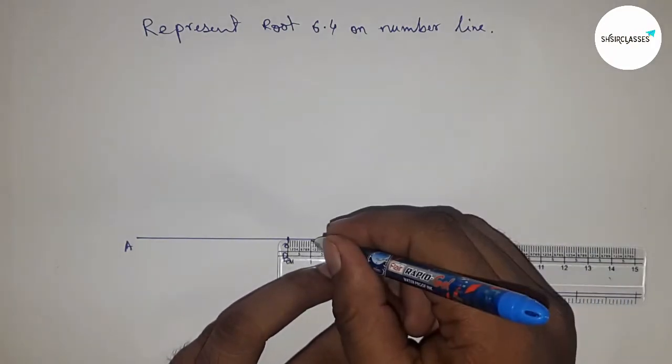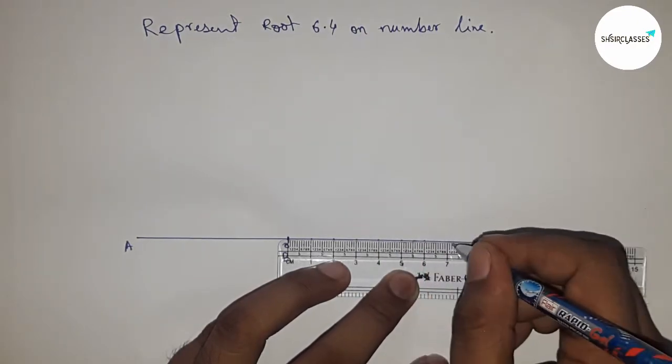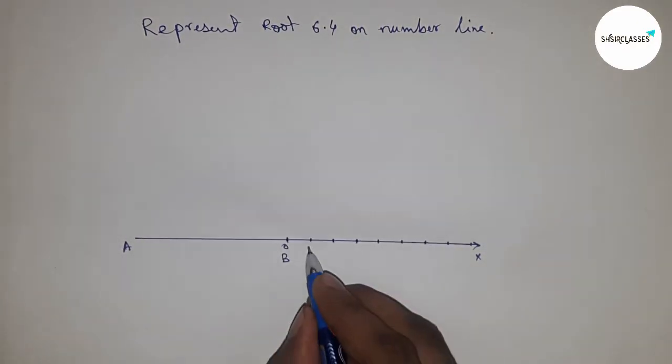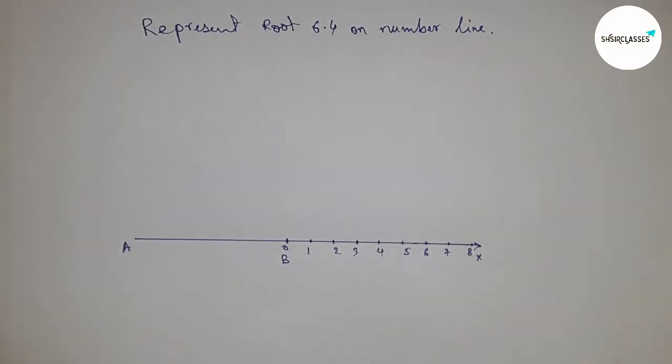Next, mark the numbers on the line from B to X, so this is 1, 2, 3, 4, 5, 6, 7, 8. And this is point C.